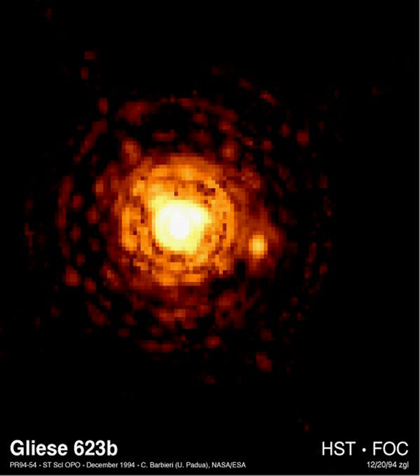Red dwarfs are very low-mass stars. As a result, they have relatively low pressures, a low fusion rate, and hence a low temperature. The energy generated is the product of nuclear fusion of hydrogen into helium by way of the proton-proton chain mechanism. Hence, these stars emit little light, sometimes as little as one ten-thousandth that of the Sun.